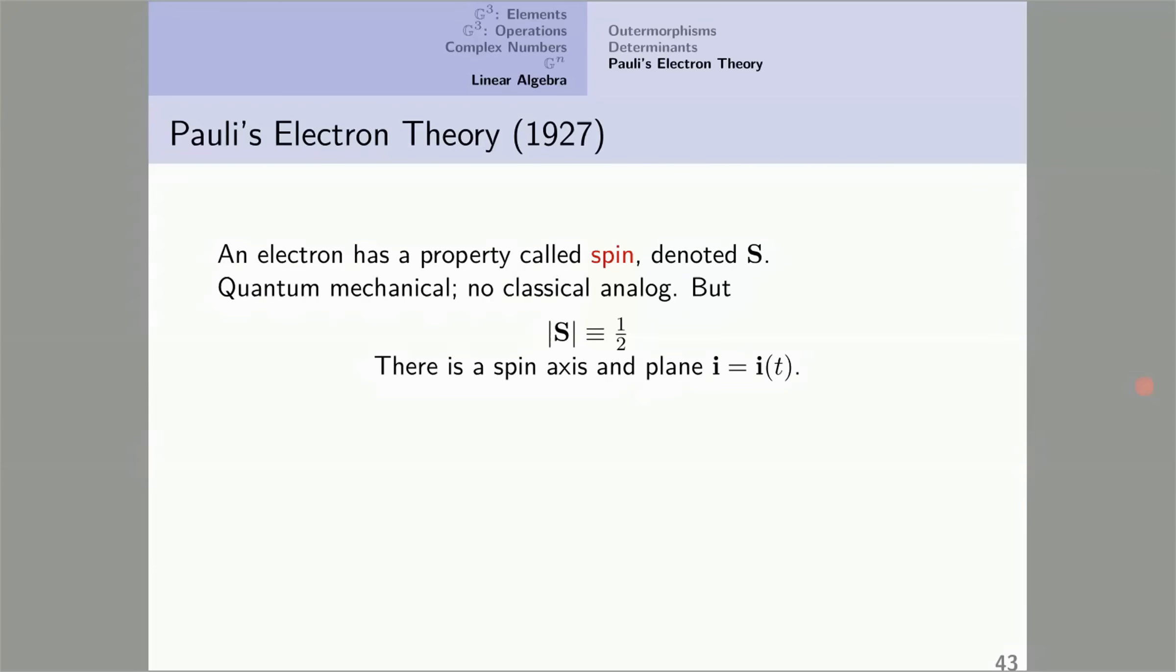But one can speak of the norm of the spin, the absolute value of the spin. It's identically equal to one-half. No matter what you do to the electron, the spin retains this same value.